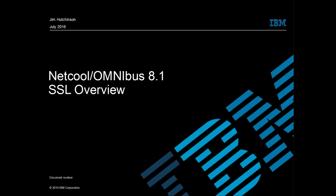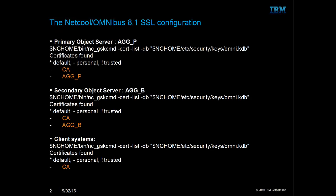Welcome to the presentation on SSL in Netcall Omnibus 8.1. In this example, the primary object server will be the CA server. The object server names will be used to define the SSL certificates for the object servers.